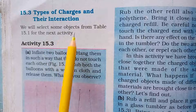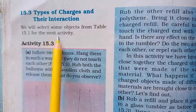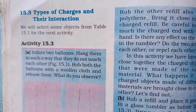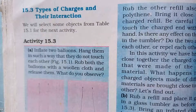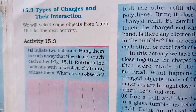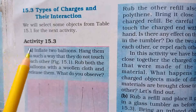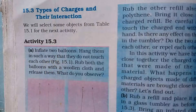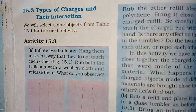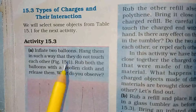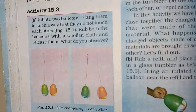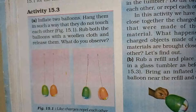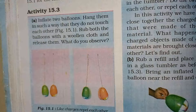We will select some objects from Table 15.1 for the next activity. Activity 15.3: Inflate two balloons and hang them in such a way that they do not touch each other. We have two balloons — hang them so that they do not touch one another.